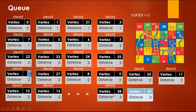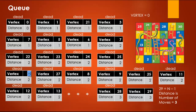Eventually the program dequeues a node and realizes the vertex is 29, which is N-1 (for 30 cells). In the real board that is cell 30, the end. At that point we stop and the distance is 3 — meaning it took 3 moves to complete the board. That's how the entire BFS-based program works: enqueue and dequeue cells one by one until the destination is reached.